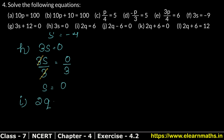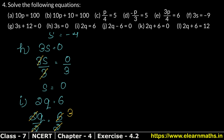Part I is: 2q equals 6. Since 2 is multiplied with q, we divide both sides by 2. The 2s cancel on the left, leaving q. On the right, 2 times 3 is 6, so 6 divided by 2 is 3. So q equals 3.